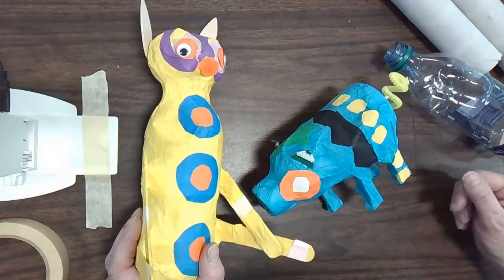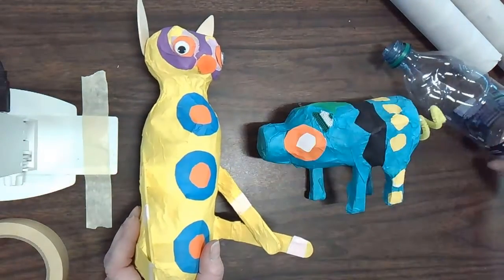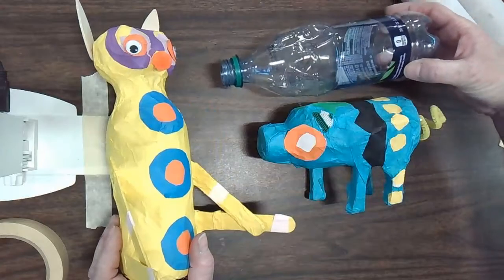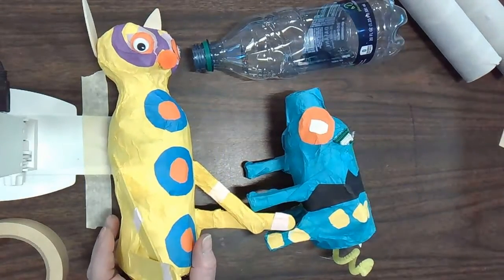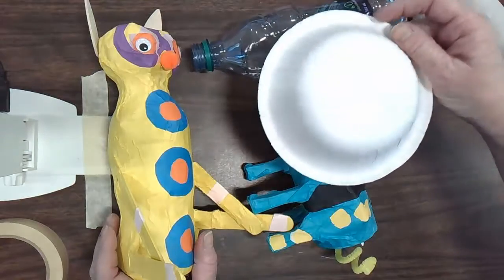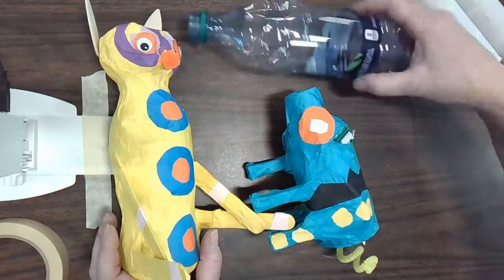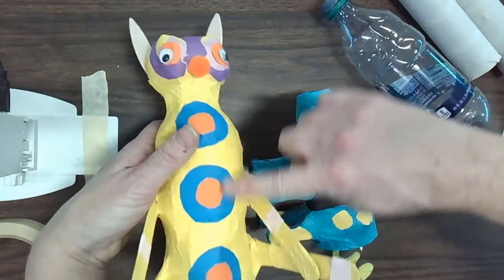So today we're going to be starting on our 3D Oaxacan animals. These are made with some recycled materials as the armature or the skeleton underneath. Most of them begin with a water bottle unless you're doing something like a turtle or something with a different shape.